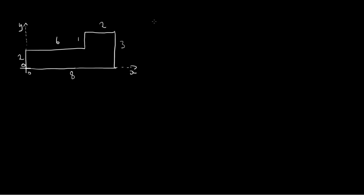So if I write out the formula again: x-bar times the area is equal to the sum of the elemental centroids times the elemental areas. In this example, I'm going to split the shape into two rectangles. So x-bar y-bar — or in column notation, the coordinate (x-bar, y-bar) — times the area. The area of the whole shape is the rectangle on the left, which is 2 times 6, which is 12, plus 2 times 3, which is 6. So we have 12 plus 6, which is 18. So (x-bar, y-bar) times 18 is equal to the sum of the elemental terms.